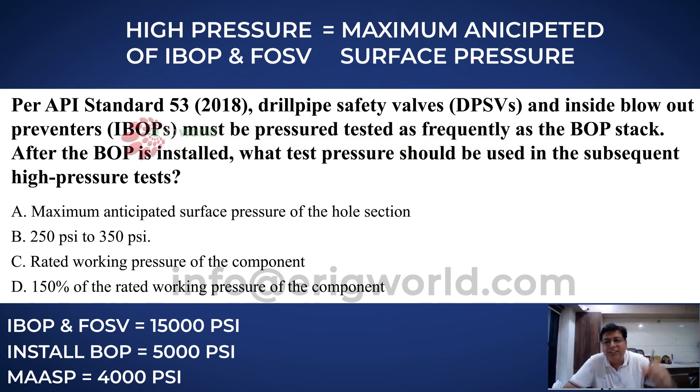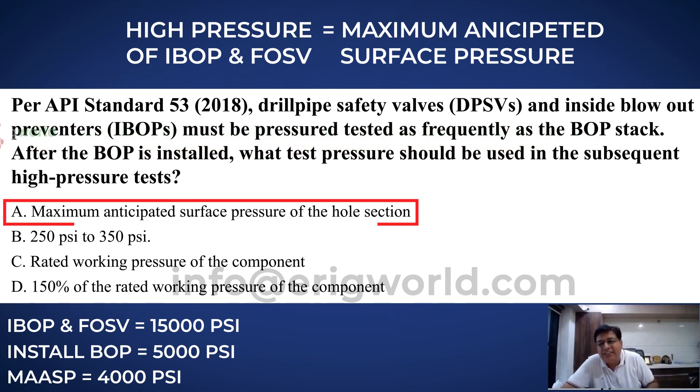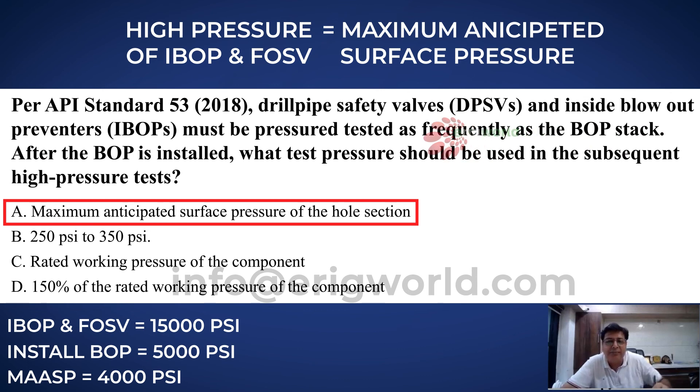So in this case, the correct answer is: maximum anticipated surface pressure of that section.